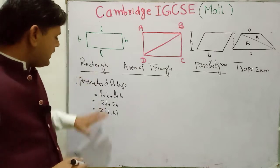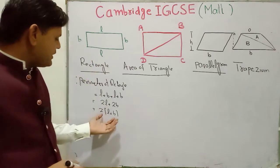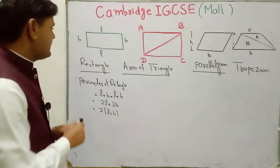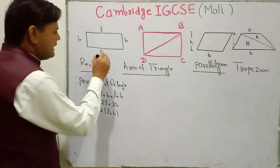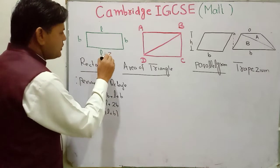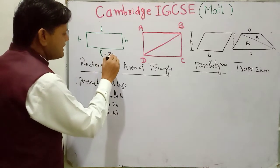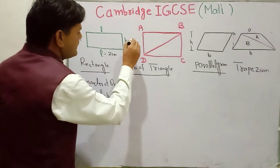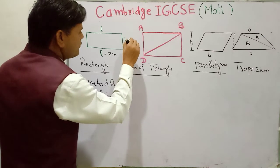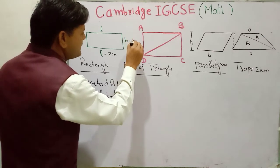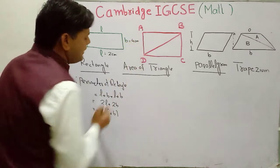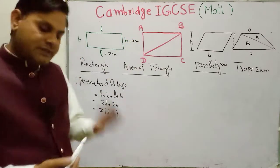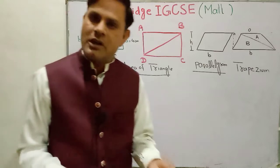So if the length and width are given to you, you can easily find the perimeter using this formula. For example, if L is equal to 2 centimeters and breadth B is equal to 4 centimeters, then find the perimeter of this rectangle.